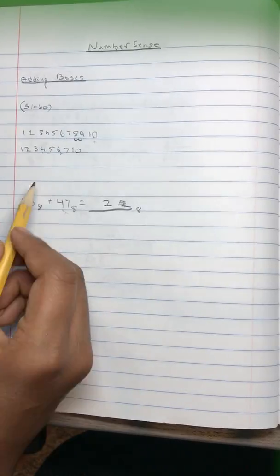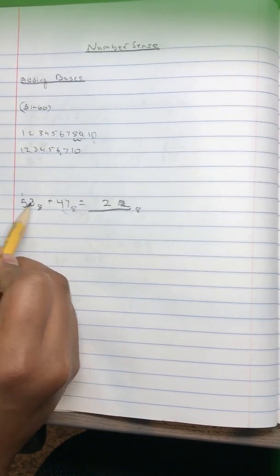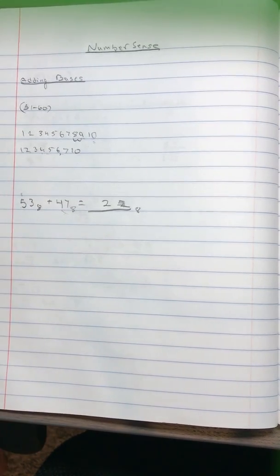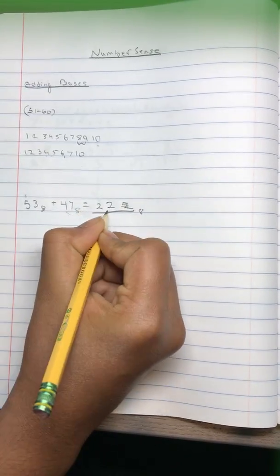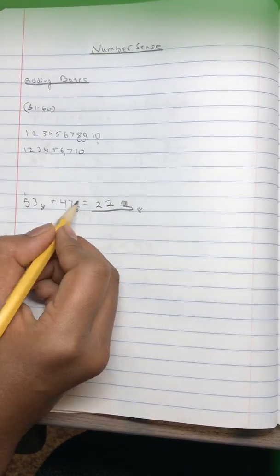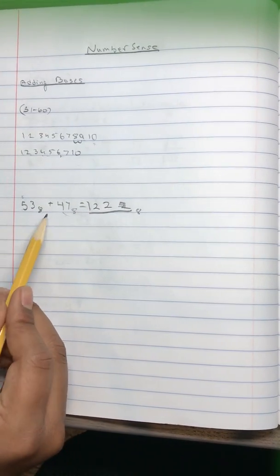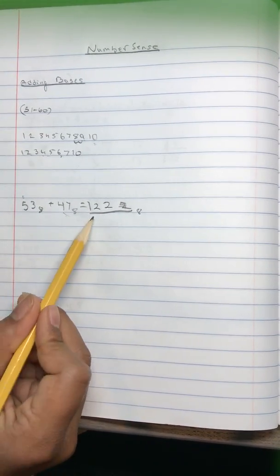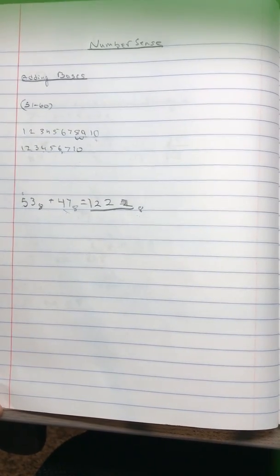Now you take the 1 and you put it on top like a carry-on. 1 plus 5 is 6, and 6 plus 4 is 10. Once again, 10 divided by 8 is 1 remainder 2. You write the 2, and since there's nothing to carry on to, you write a 1 here. So 53 base 8 plus 47 base 8 is 122 base 8. This question comes up fairly often, and that's what you have to do.